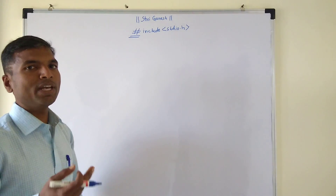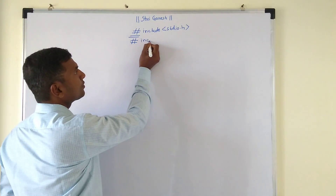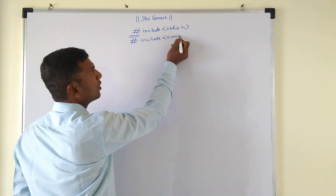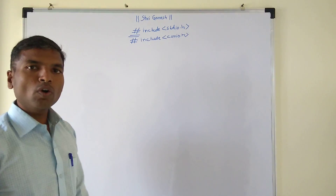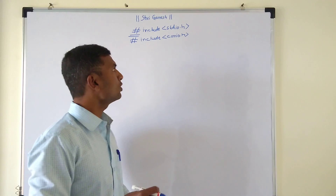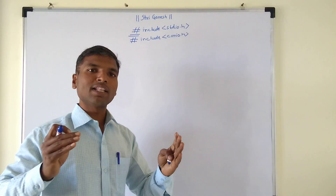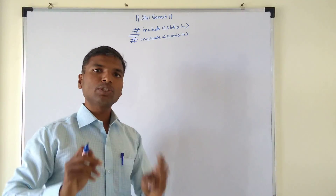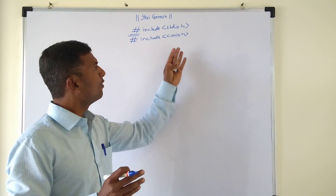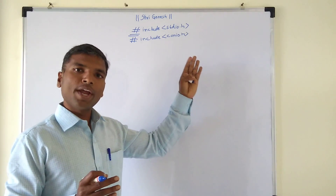Another commonly used header file is #include conio.h. This conio.h header file is useful for console applications. conio stands for Console Input Output. Whatever output we see will appear on a black window called the console, and the functionality needed for that is available through this header file.